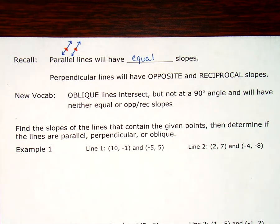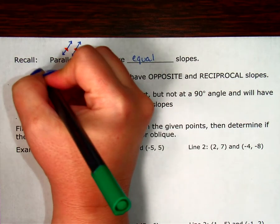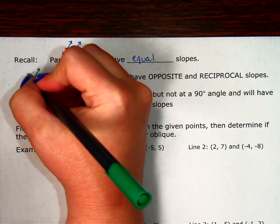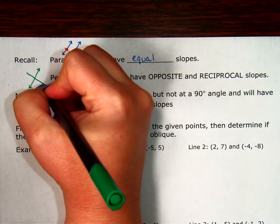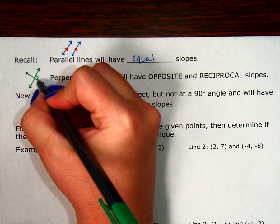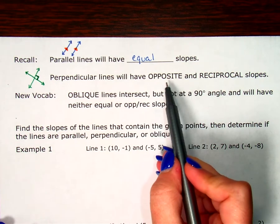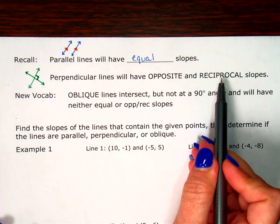Next, we have perpendicular lines. Remember, perpendicular lines are two lines that when they intersect, they intersect at a 90 degree angle. The note, the picture, or what you'll see in a drawing is the little right angle. Perpendicular lines will have opposite and reciprocal slopes.